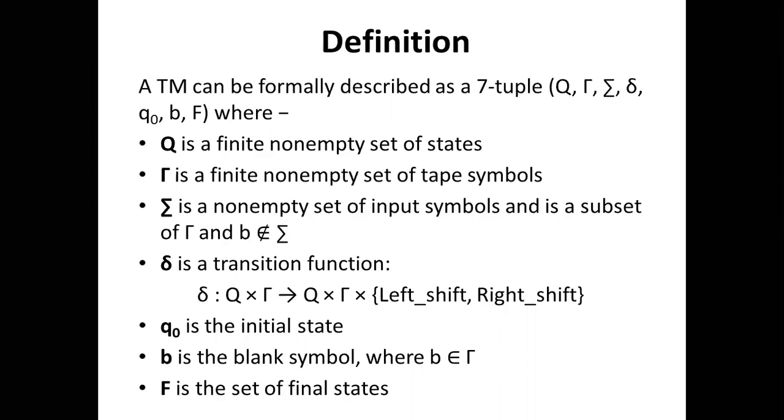The transition function takes a state and reads a symbol from the input tape. It then moves to another state, replaces the tape symbol with a given symbol, and moves the read-write head to the left or right direction. This is represented as: δ : Q × Γ → Q × Γ × {Left_shift, Right_shift}.